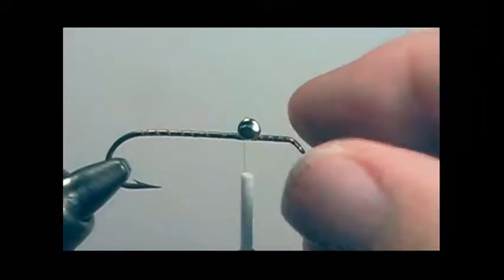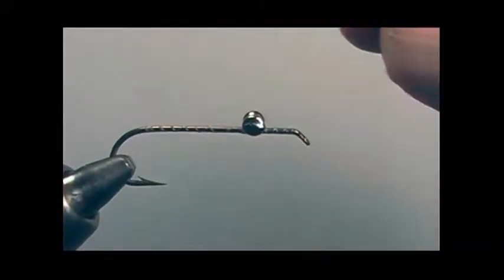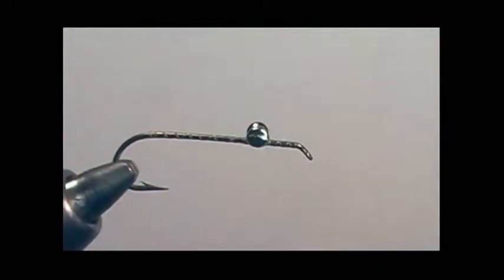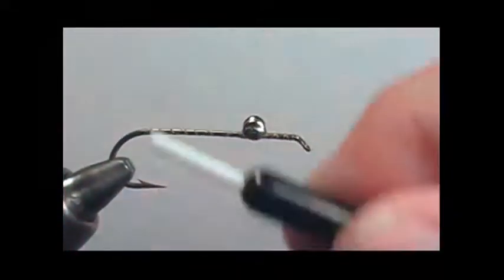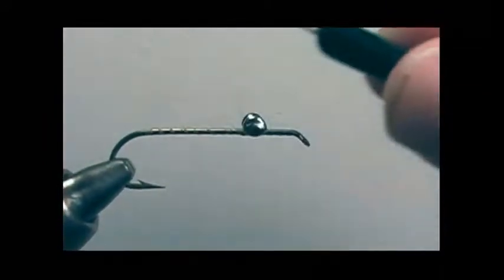You want to just wrap and lash them to the shank of the hook as shown. Just keep crisscrossing the thread over the dumbbell to the shank of the hook.